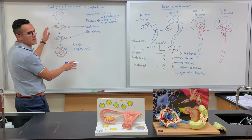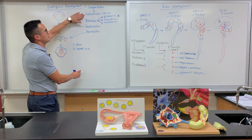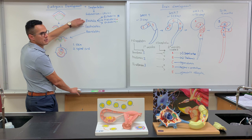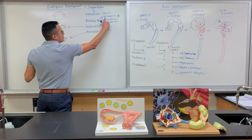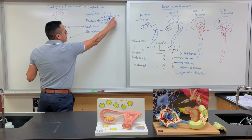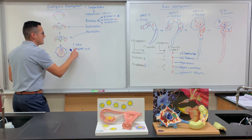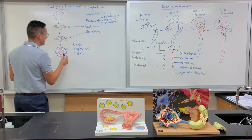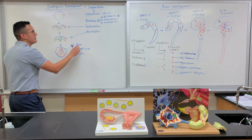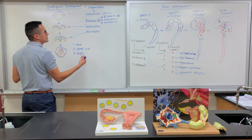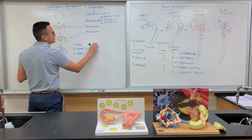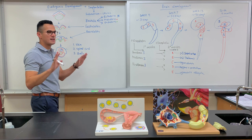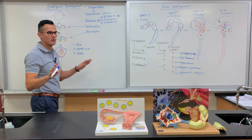A little bit about embryonic development: implantation occurs within the endometrium of the uterus, due to the formation of our blastula. The ectoderm is the particular region in which we get the formation of our skin, the spinal cord, and the brain. These are the three different layers that form within the blastula, but we're focusing specifically on the ectoderm. The mesoderm and endoderm form the lining of the intestines and other structures, but that's not the focus of this lecture.